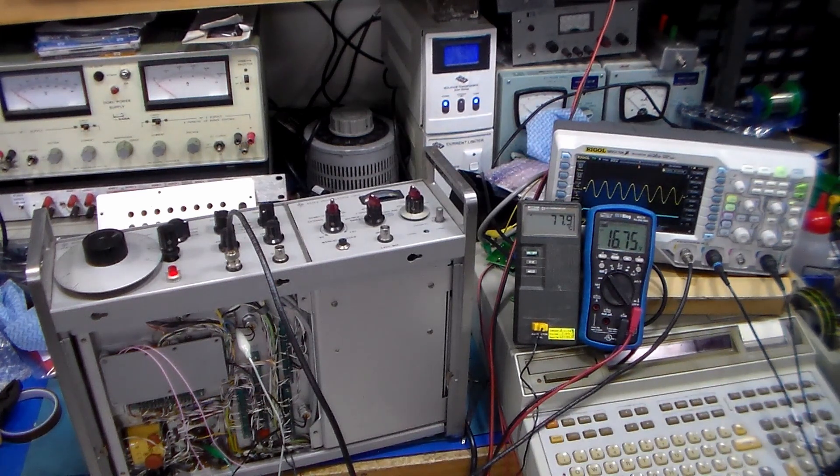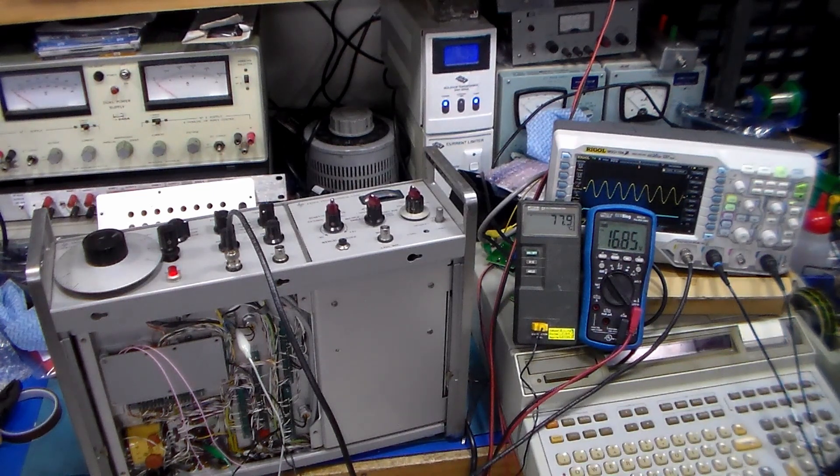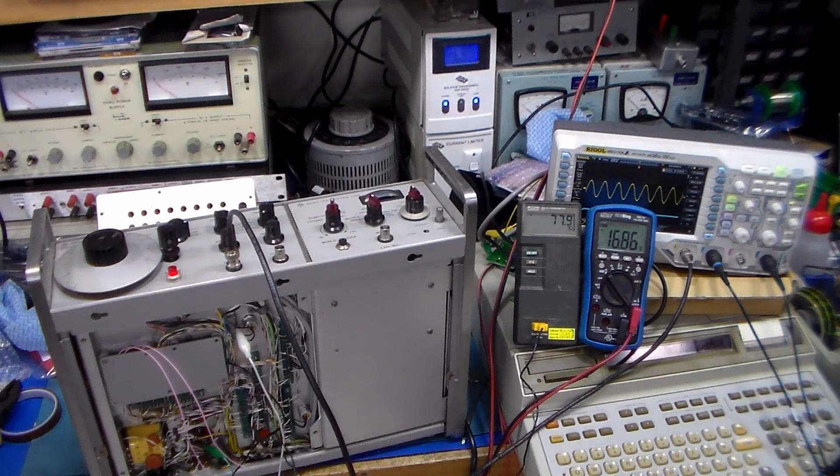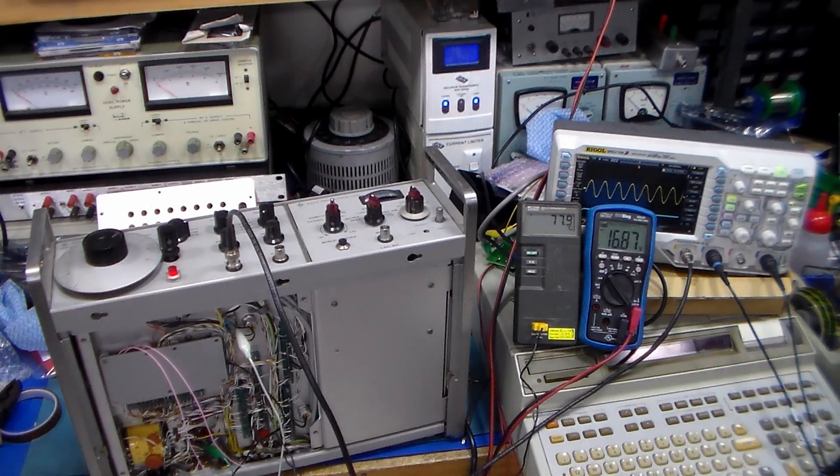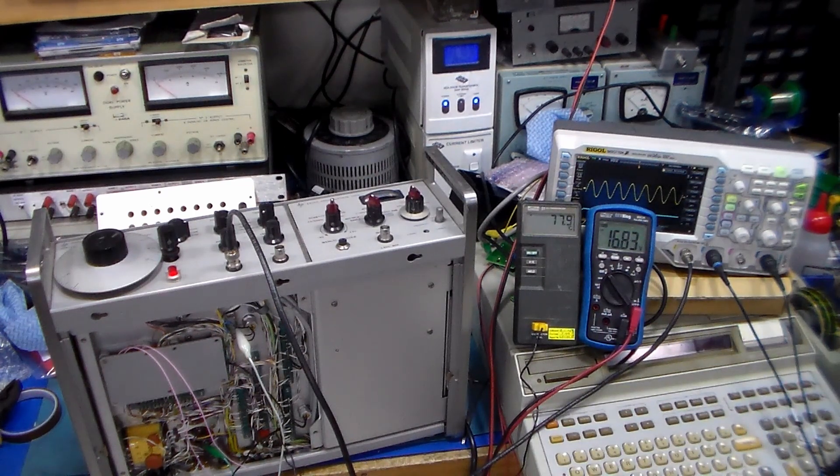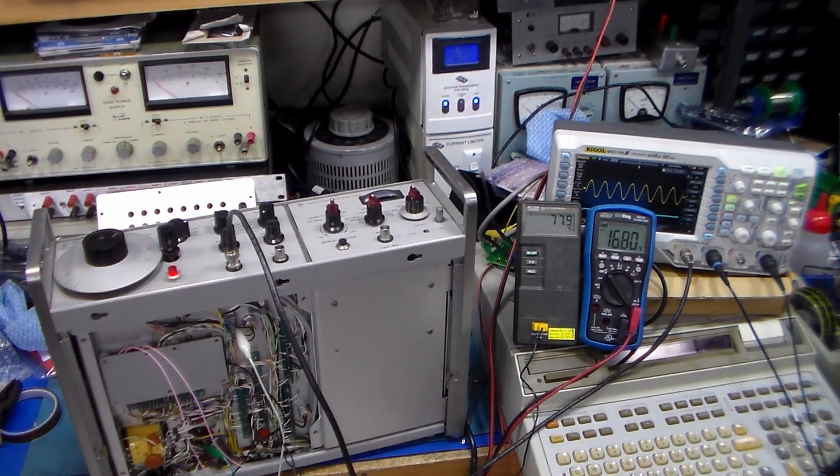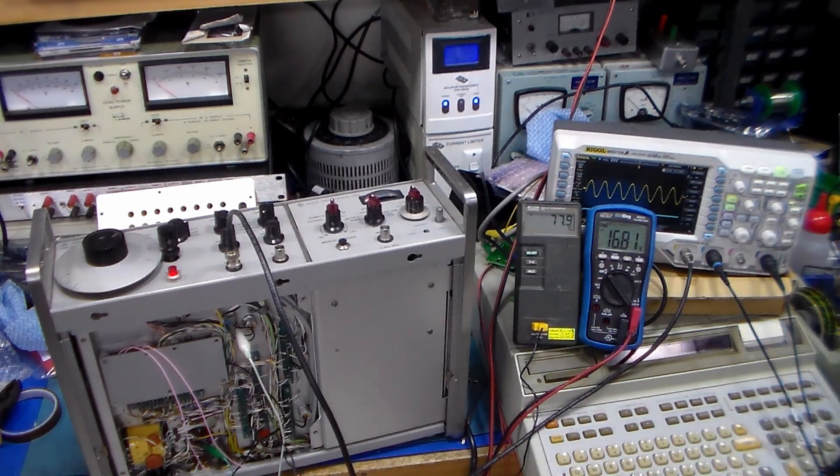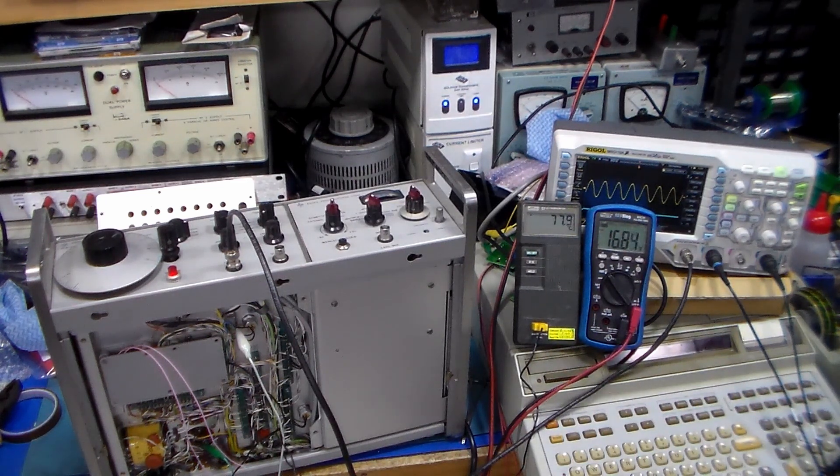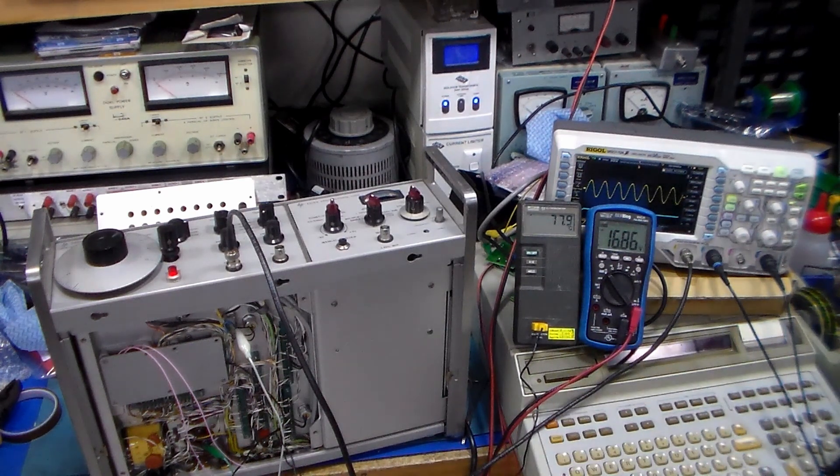After looking through various HP component lists that I have, it's a 2N3417. The transistor that was in there was an MPS3391, which, for all intents and purposes, probably is close. It's an NPN transistor. But there are differences. It's got a higher gain. It's got lower operating voltages. However, what had happened was that the fuse had blown.